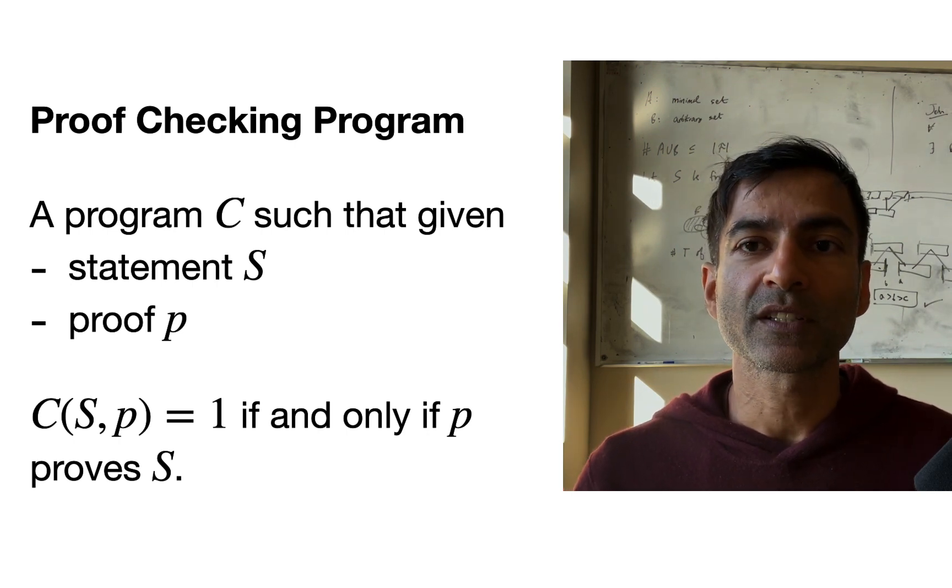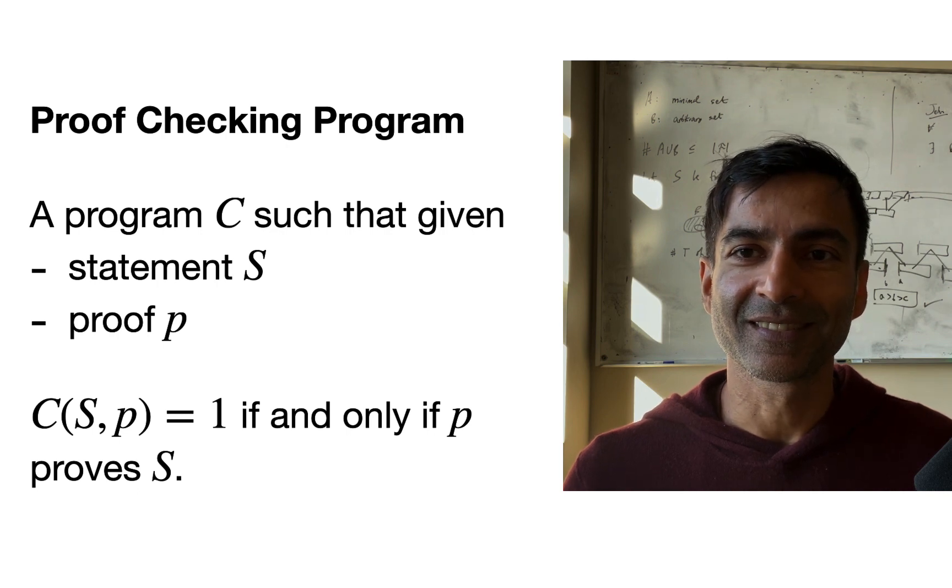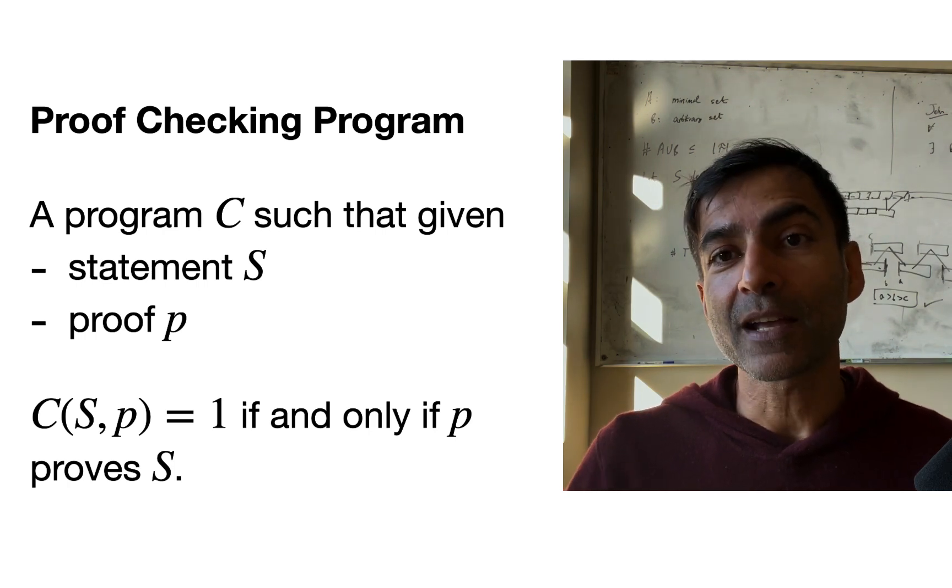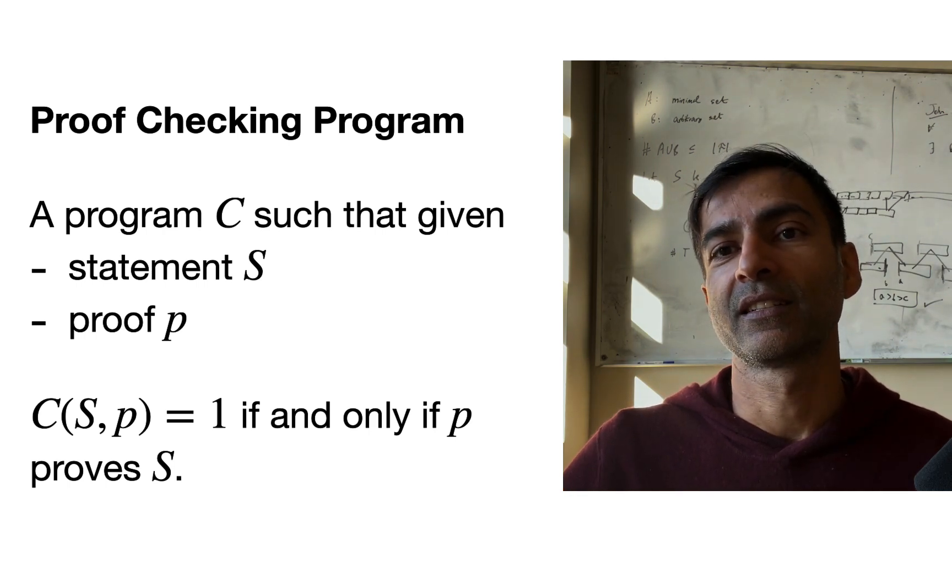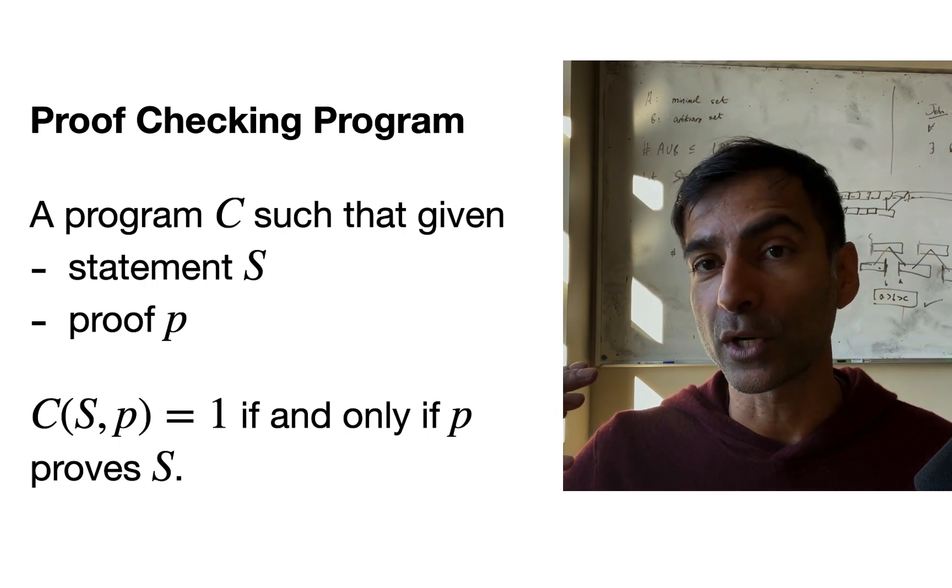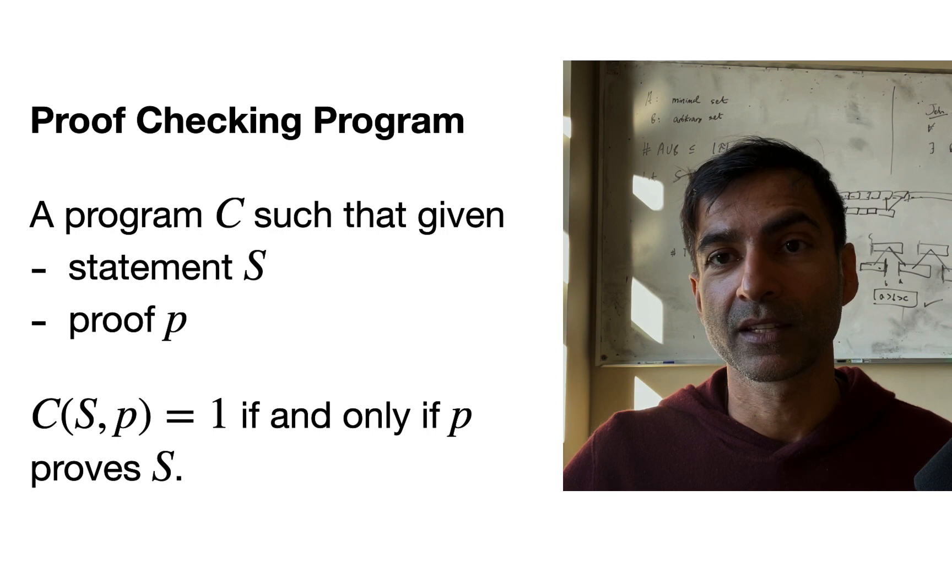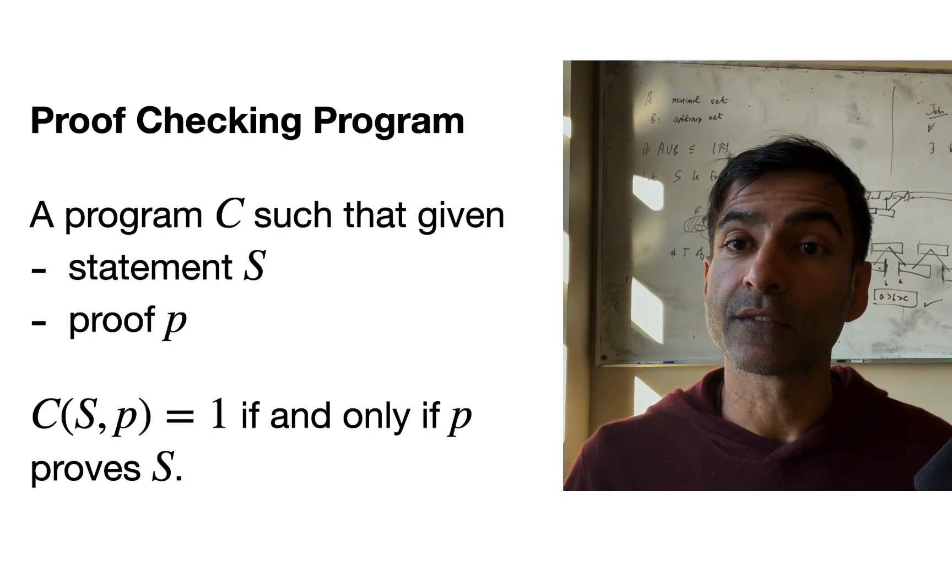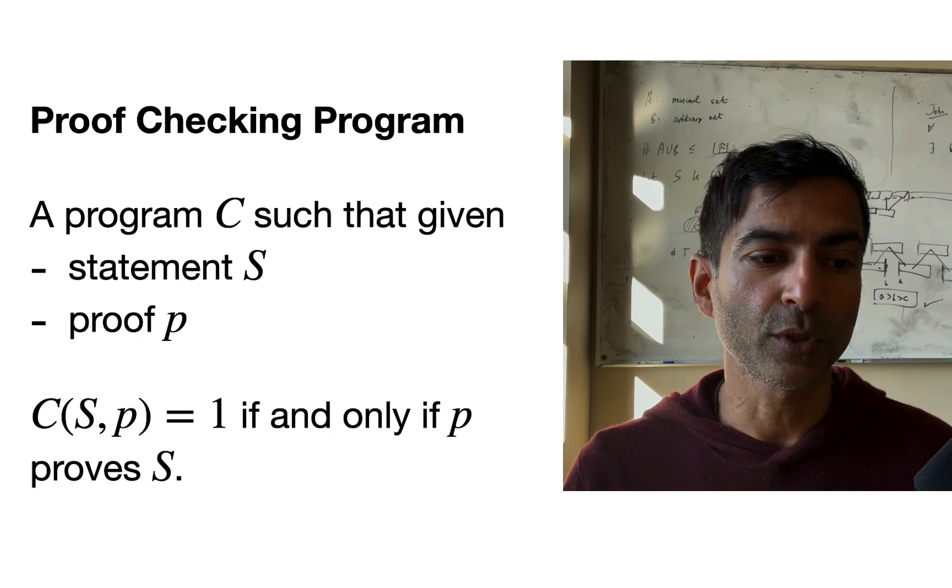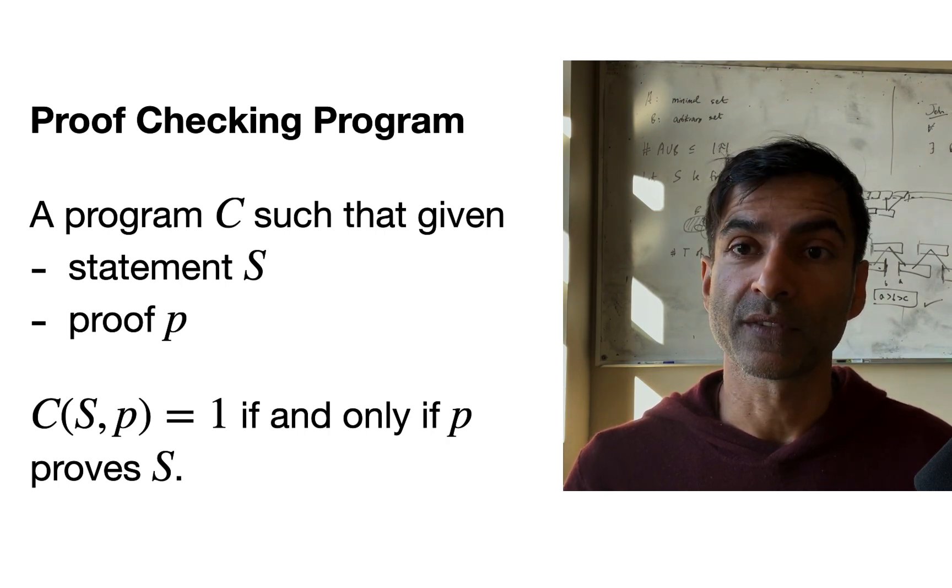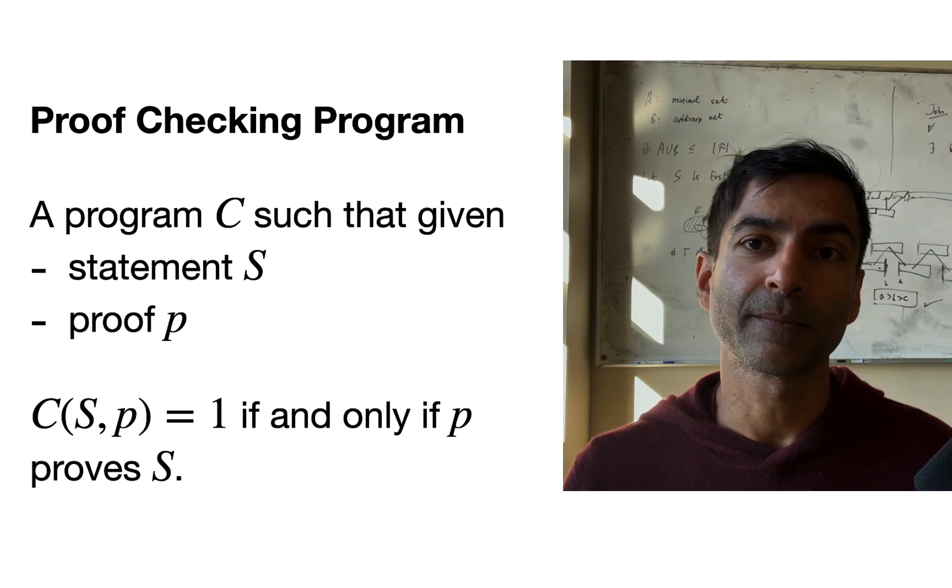A proof-checking program, you can think of as just yourself. I can think of myself as a program. If I'm interested in trying to understand what's true about the world, then I can think of my own brain as a program. And this program is given two things as input: a statement S, and a proof of that statement, a purported proof of that statement, P.